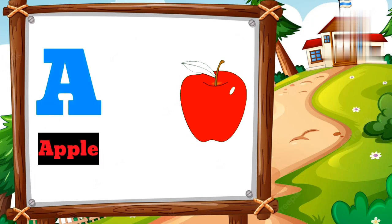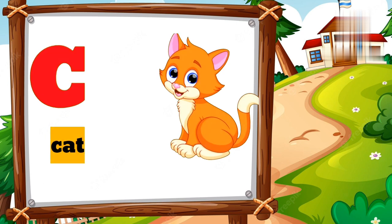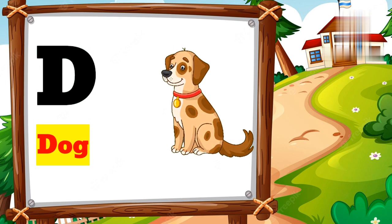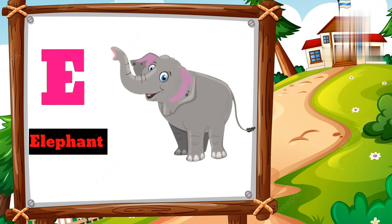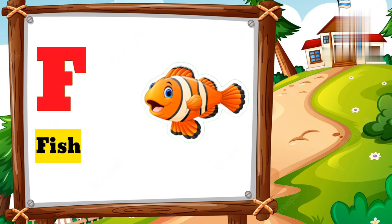A for apple. B for ball. C for cat. D for dog. E for elephant. F for fish.